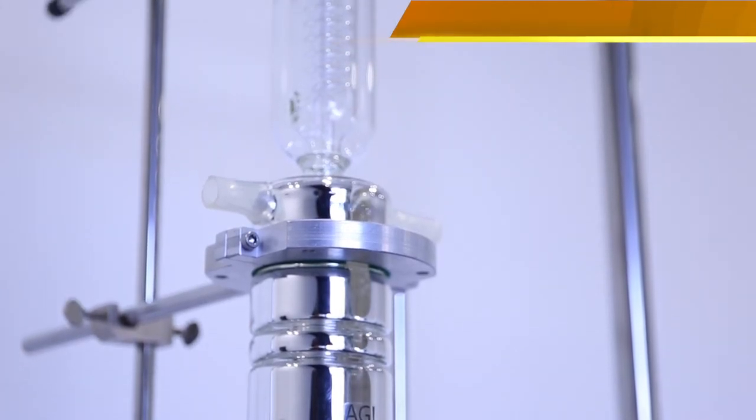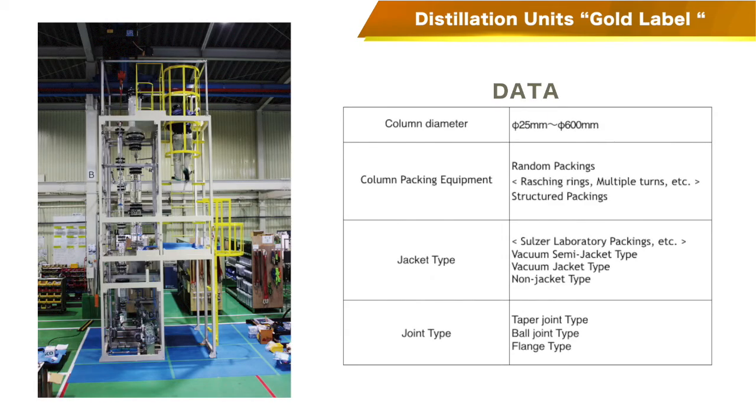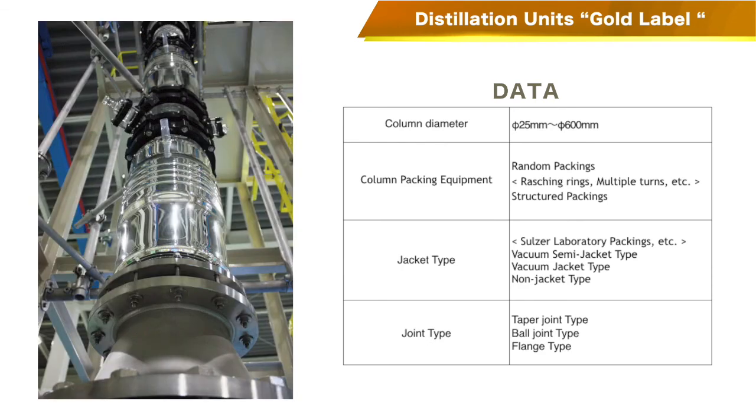AGI Gold Label Distillation Units with Packed Column. The essential part of this distillation unit is the Packed Column. Capacity and chemical process may be ideally arranged through changing various packings.